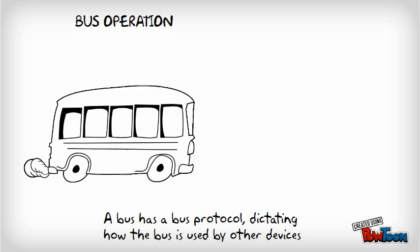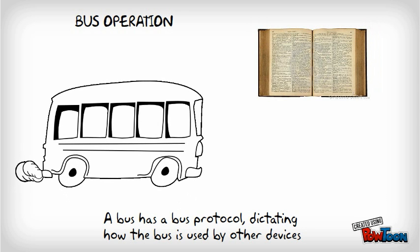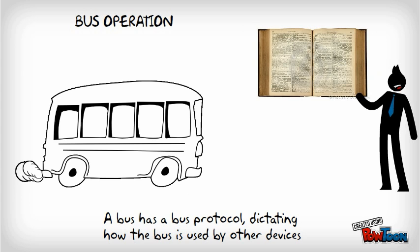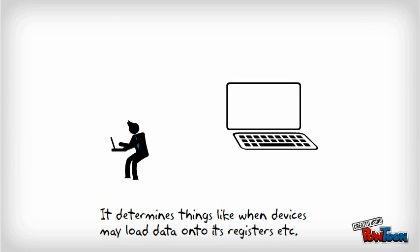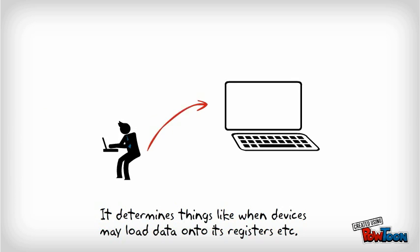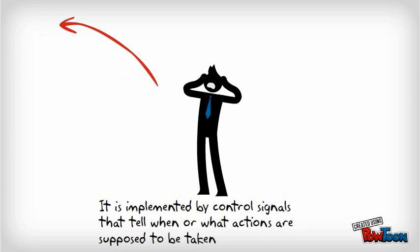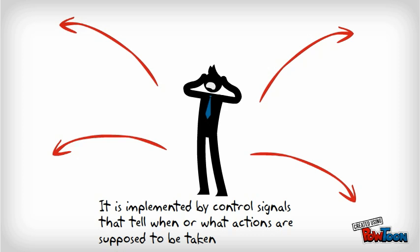Bus operation: A bus has a bus protocol dictating how the bus is used by other devices. It determines things like when devices may load data onto its registers, etc.